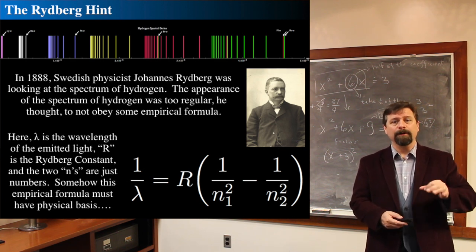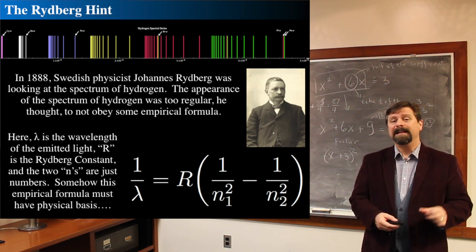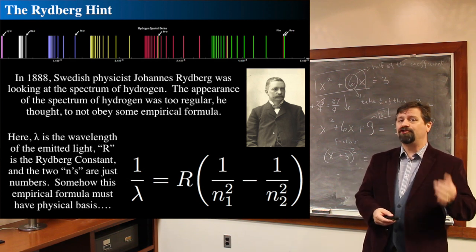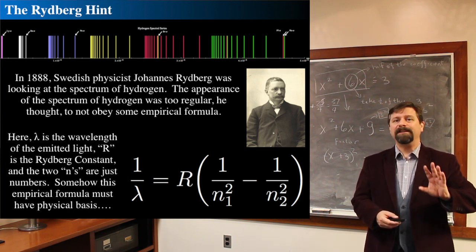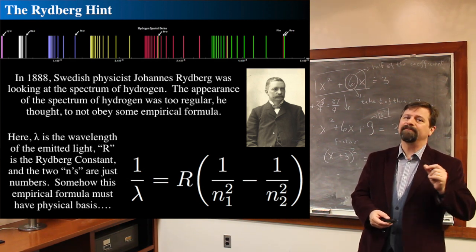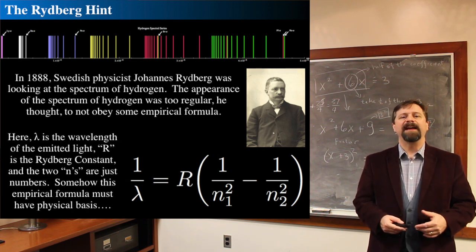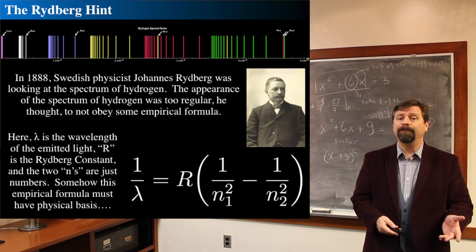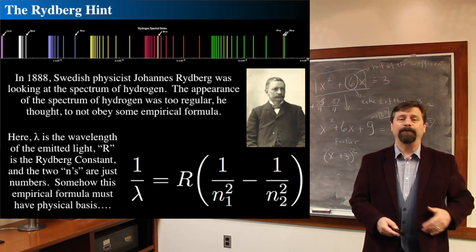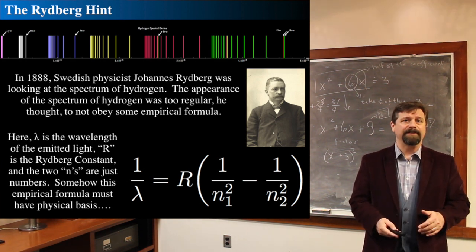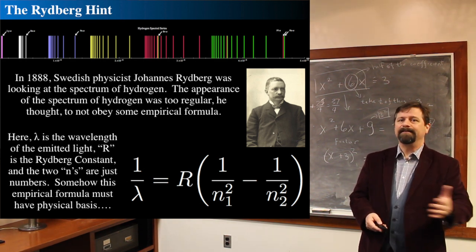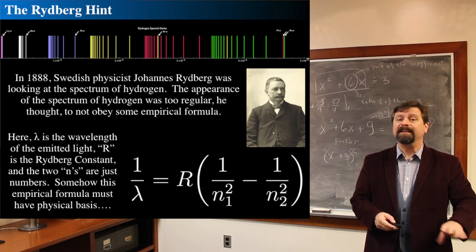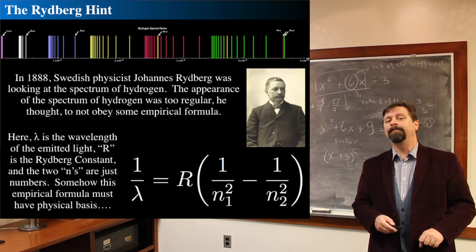Fascinatingly, the Rydberg formula for the hydrogen atom is extraordinarily simple. What you sometimes do in science is create an empirical formula for what you observe in nature, and then try to understand the underlying science below it. Rydberg made a formula only based off the data, but had no underlying reason as to why it would be this way. The Rydberg formula gives us a clue that we are looking for deeper underlying physics.